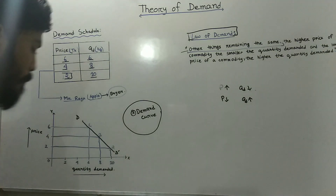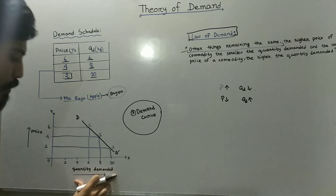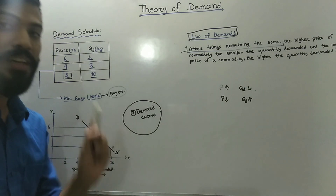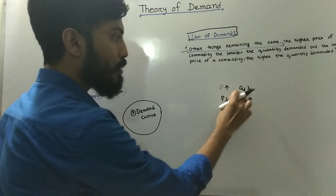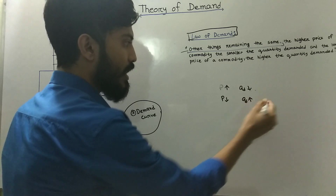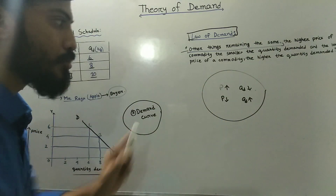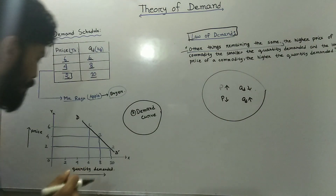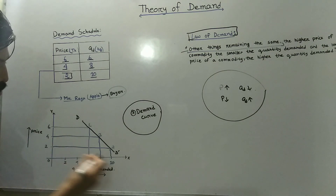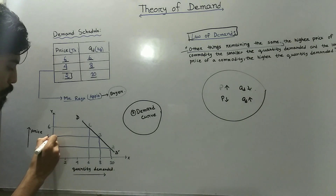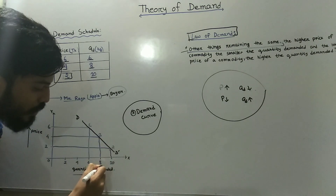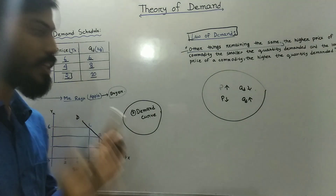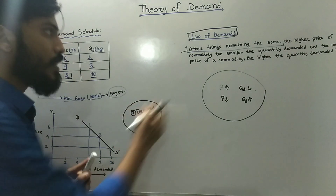Points A, B, C. Price and quantity demanded have an inverse relationship — when the price increases, the quantity demanded decreases. When the price is higher, the quantity demanded is 10 kg; at a lower price, 8 kg; at an even lower price, 6 kg. This illustrates the law of demand.